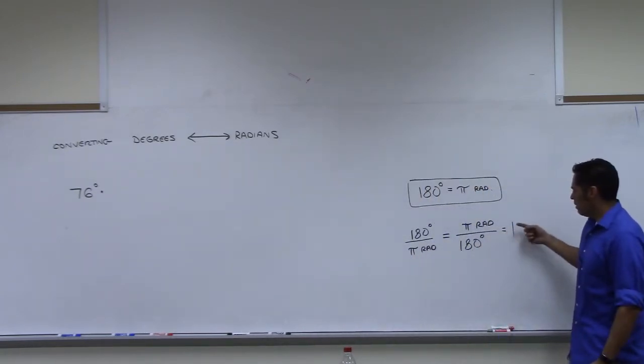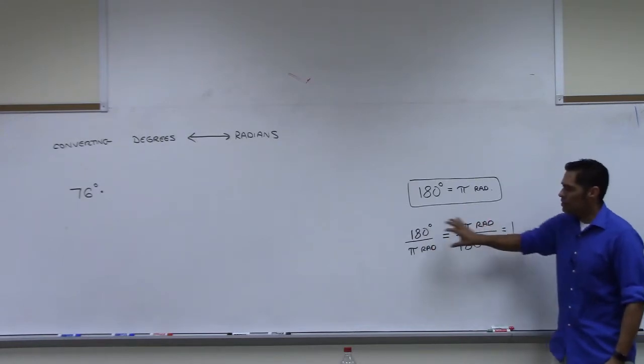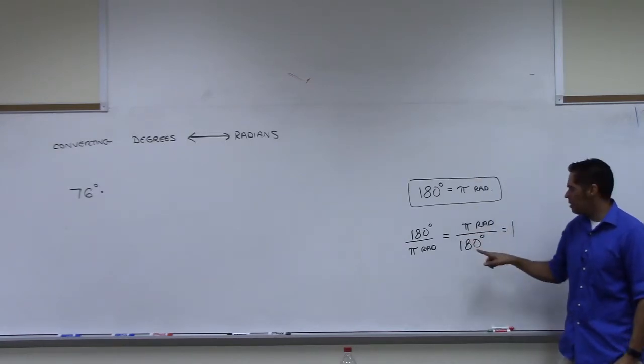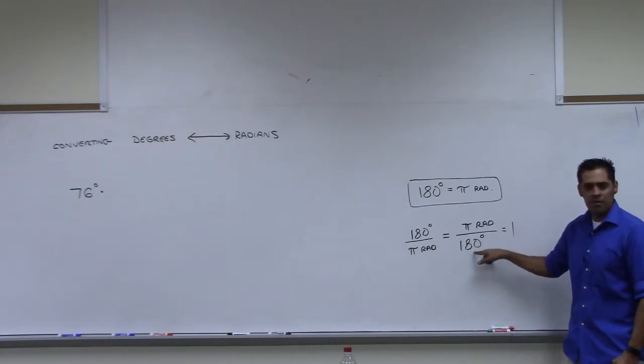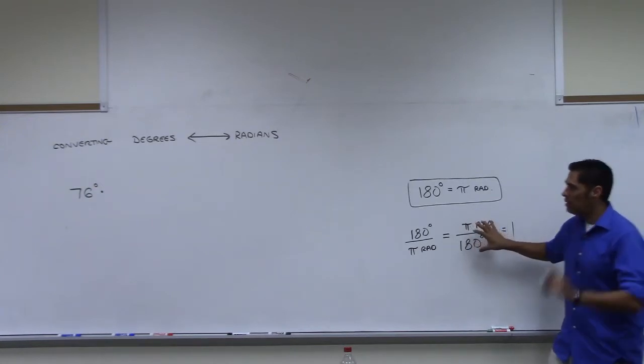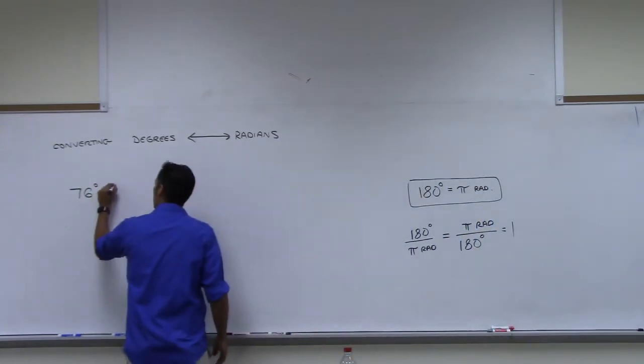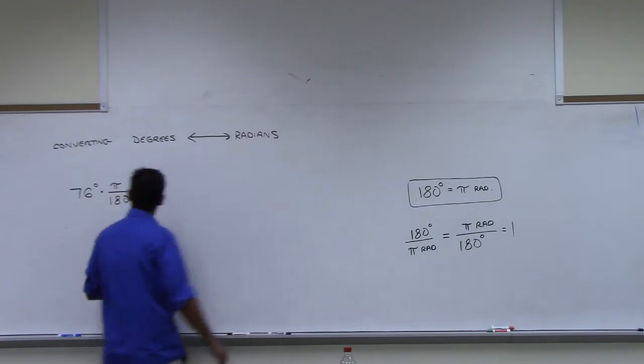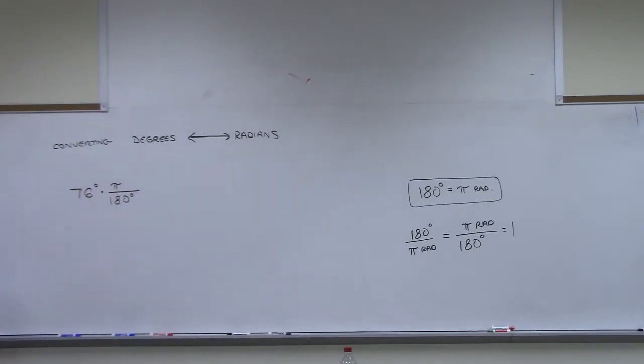To get this over to radians, what I'm going to do is I'm going to multiply this times 1. Because if I multiply by 1, it doesn't change the problem, or it doesn't change the expression. But I get to choose. I can replace 1 with either one of these. I'm trying to get rid of degrees. So I would like to cancel degrees out. That means I want degrees on the bottom. So what I'm going to do is use this right here. These are called conversion factors. So I'm going to multiply this times pi, I'm not even going to put radians anymore, I'm just going to put pi and then over 180.